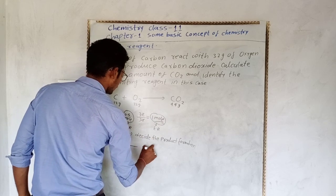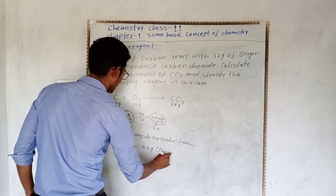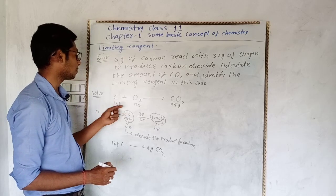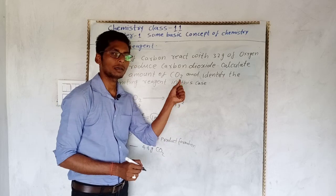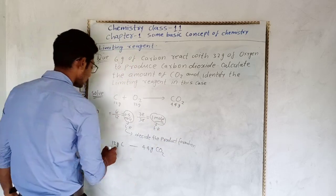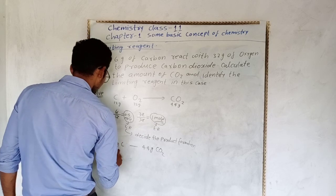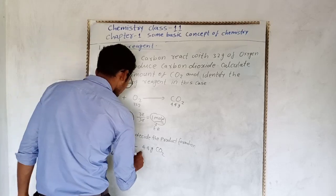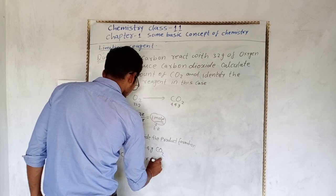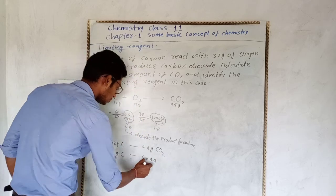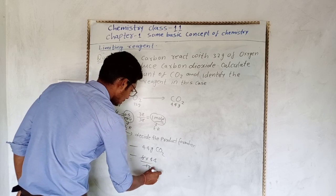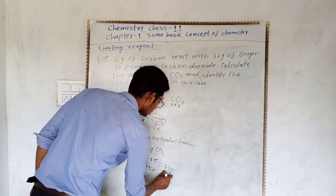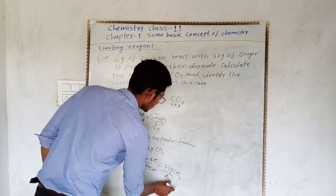12 gram carbon gives 44 gram of CO2। We have 6 grams of carbon. So: 6 grams carbon gives how much CO2? Cross multiplication: 6×44/12 = 22 grams of CO2। This is your answer - 22 grams of CO2 is produced।